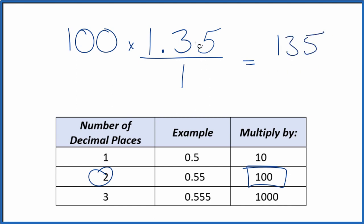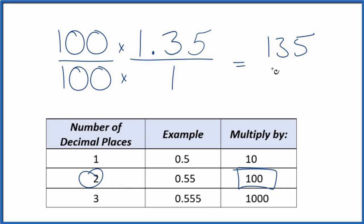But we can't just multiply the numerator by 100. We also need to multiply the denominator by 100. That's because 100 divided by 100 is just 1. So we're multiplying by 1. We don't change the value, just the way it's represented. 100 times 1 is 100.